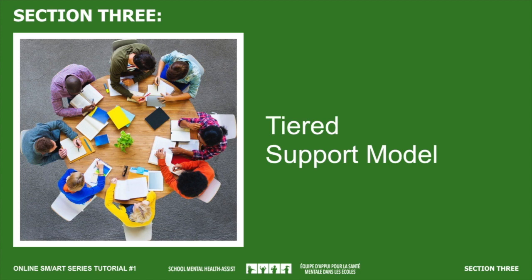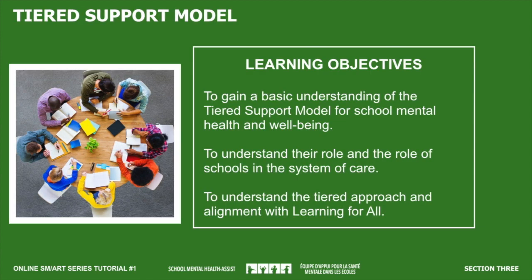Using a tiered model of support, we can help to ensure positive mental health for all students, preventative strategies for those at risk, and more intensive interventions for those experiencing significant mental health problems. This section introduces the Aligned and Integrated Model for student mental health at school. By working through this section, you will gain greater understanding of tiered models of support, the AIM approach in particular, and your role as an educator within this model.